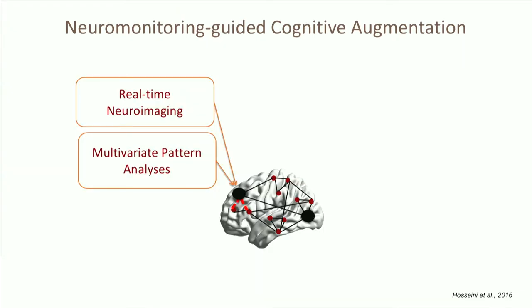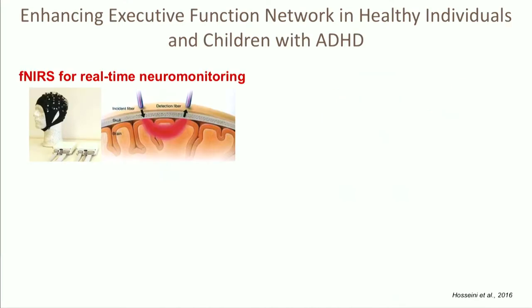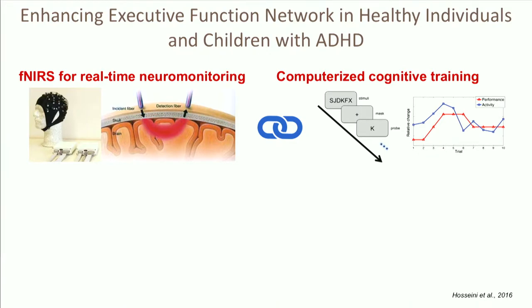One of the exciting projects we're doing is linking neuroimaging with cognitive intervention. We use real-time neuroimaging with multivariate pattern analysis to localize the target we want to improve, monitor activity in that region, and integrate it with cognitive training to see how we can engage that network. We're using near-infrared spectroscopy (NIRS) for neural monitoring — a more cost-effective version of fMRI with less spatial resolution but high ecological validity and ease of use in clinical populations. Alongside that, we use computerized cognitive training.